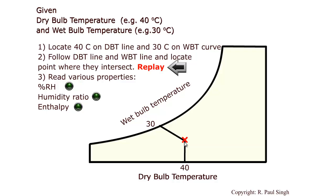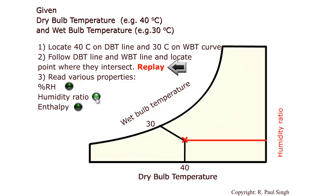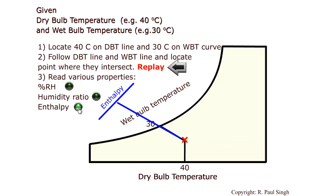The point where those two lines meet is where we determine all the remaining properties: percent relative humidity, humidity ratio, and enthalpy. At that point we determine the percent relative humidity, the humidity ratio by following the line where it meets the humidity ratio axis, and the enthalpy by following the inclined enthalpy line as shown.